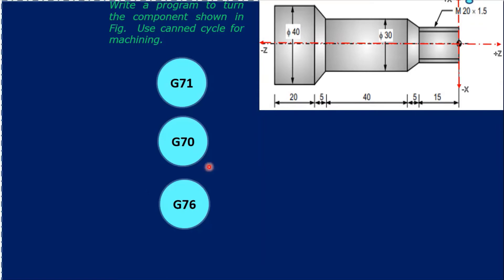When writing the program, you first need to find the coordinates. Along the diametrical direction it is always X, and along the length of the component it is always Z. When the tool moves towards the right from the face of the component, the coordinate is always plus. When it moves towards the left along the length, the coordinate is minus. If the tool moves away from the operator, the coordinate is plus X, and when it moves towards the operator it is minus X.